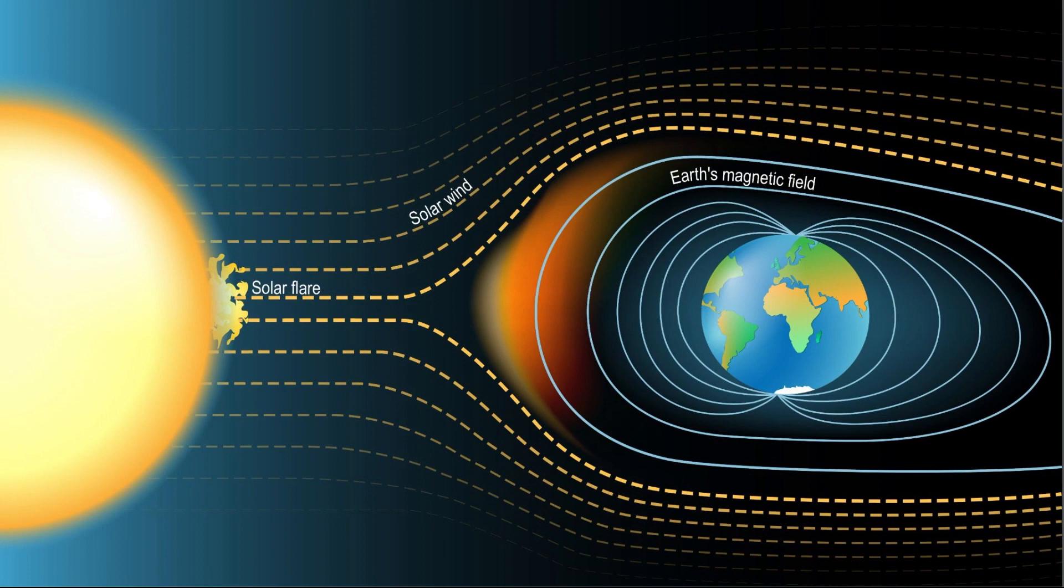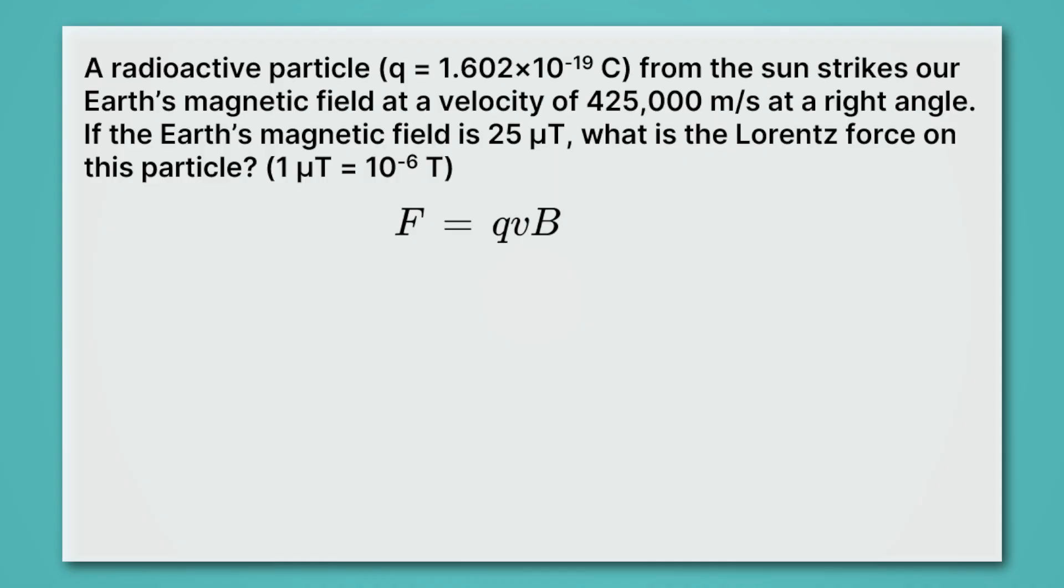That's what happens in the case of our Earth's shield. Remember, here we have a bunch of charged particles flying towards the Earth, and they get bent by the Earth's magnetic field. In this lesson, we're actually going to calculate the strength of this force. This problem says, a radioactive particle, and it gives us the charge, from the Sun strikes our Earth's magnetic field at a velocity of 425,000 meters per second. That's a pretty fast particle. At a right angle.